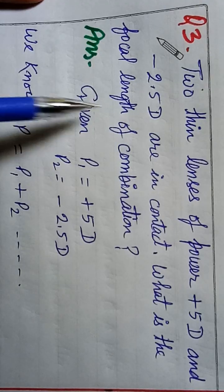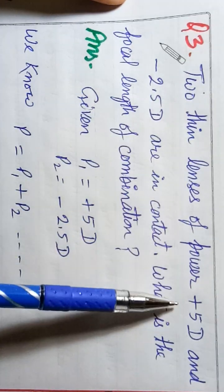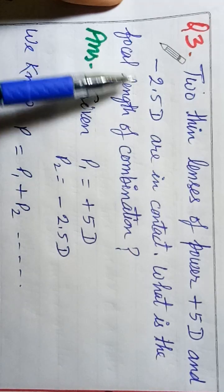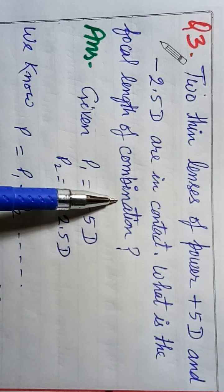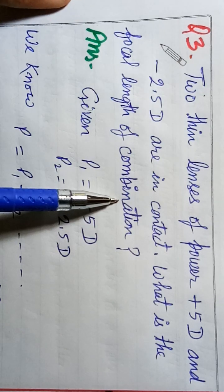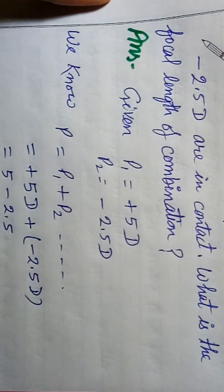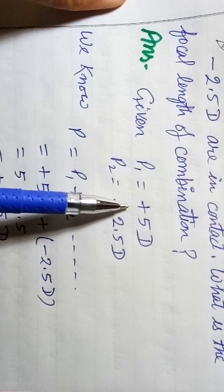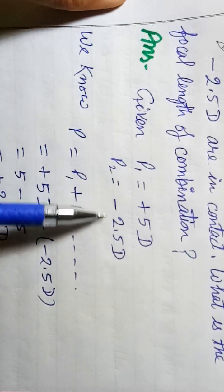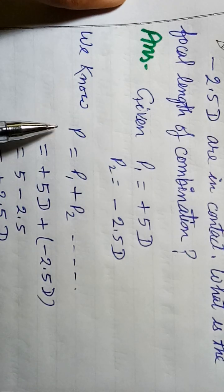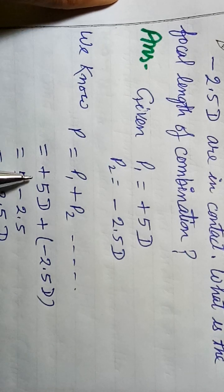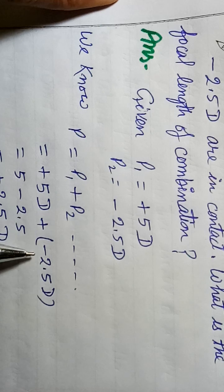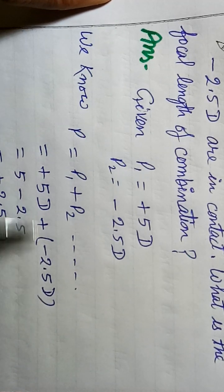Q3: Two lenses of power P1 = plus 5 D and P2 = minus 2.5 D are in contact. What is the focal length of the combination? For a combination of lenses, the total power P = P1 + P2.